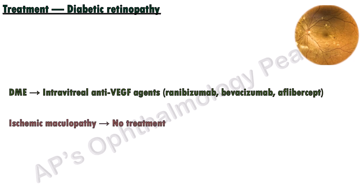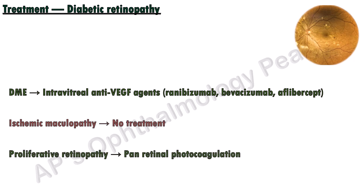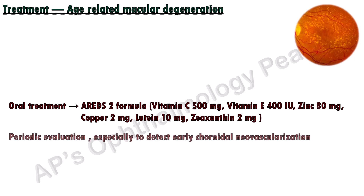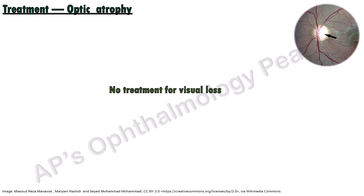Diabetic macular edema is treated with intravitreal anti-VEGF agents such as ranibizumab, bevacizumab, and aflibercept. There is no treatment for ischemic maculopathy, and proliferative retinopathy is treated with pan-retinal photocoagulation. In dry age-related macular degeneration, antioxidants and supplements as specified in the AREDS 2 formula may be given. Periodic evaluation, especially to detect the development of choroidal neovascularization, should be done.